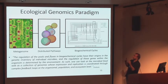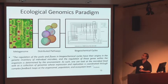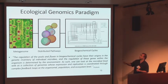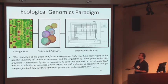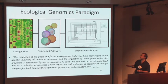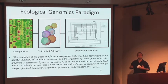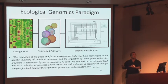The paradigm is that we go from this biological matrix that we have difficulty comprehending to an appreciation for how the information in the matrix is distributed among different cellular components of the ecosystem, and then how that distribution and the interaction of those components can give rise to global and modern-scale biogeochemistry. This is a quote from Penny Chisholm — over 10 years old now, a white paper to NSF, but very prescient: 'The regulation of the pools and fluxes in biogeochemical cycles have their origins in the genetic inventory of individual microbes. The regulation of these genes within the organism is determined by the environment. As such, one can look at the microbial food web as a collection of genomes whose expression and replication has coordinated complex feedback loops at the organismal, population, and ecosystem level.' This was thinking about metabolism as a food web within the microbial world.